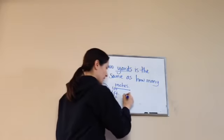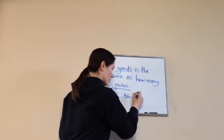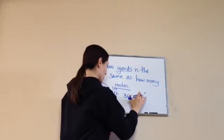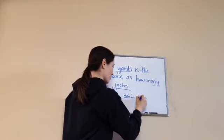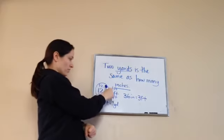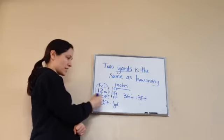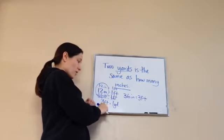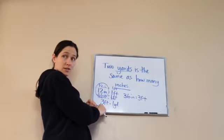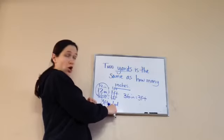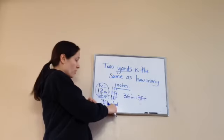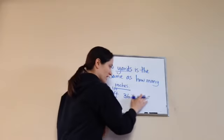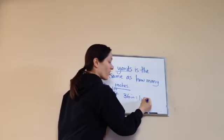So 36 inches equals three feet. And since three feet equals one yard, 36 inches is one yard. One foot, two feet, three feet equals 36 inches — and that equals one yard.